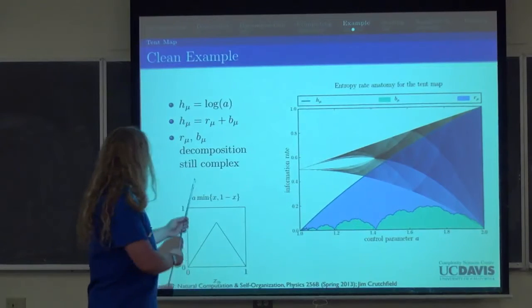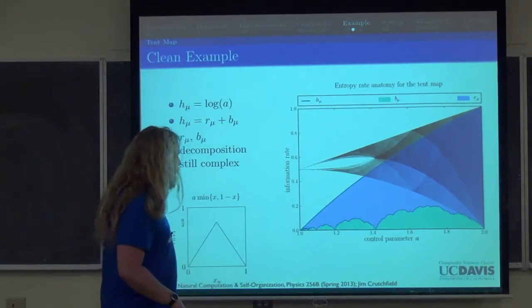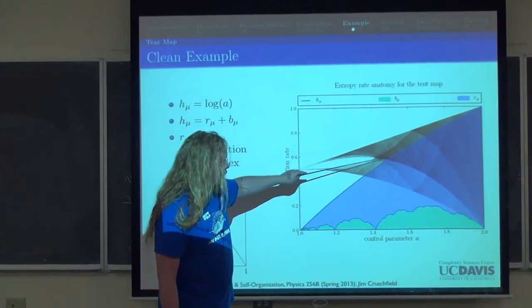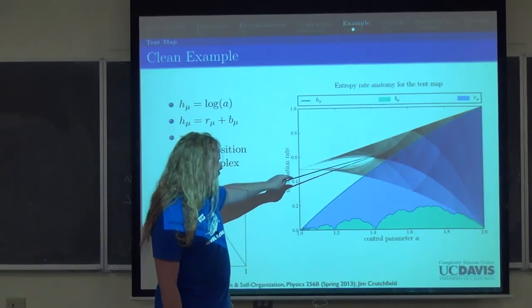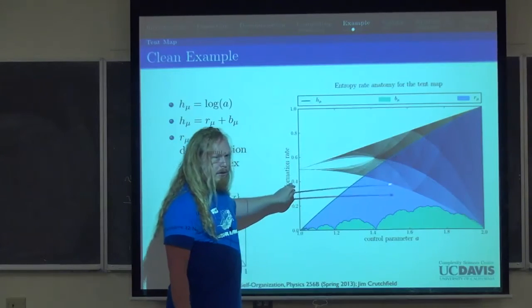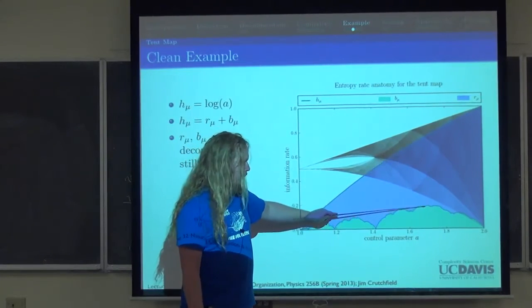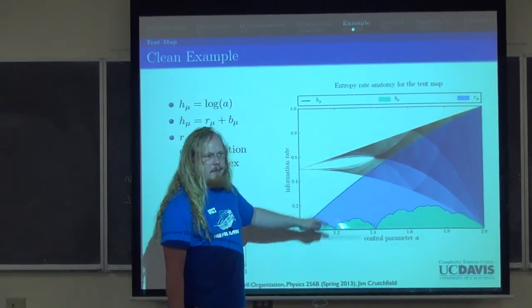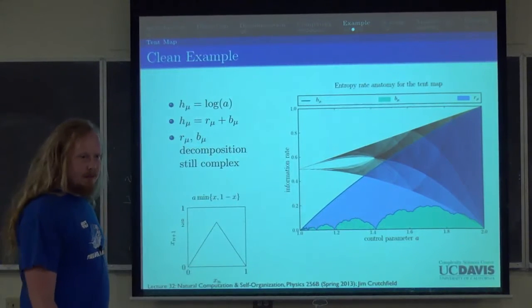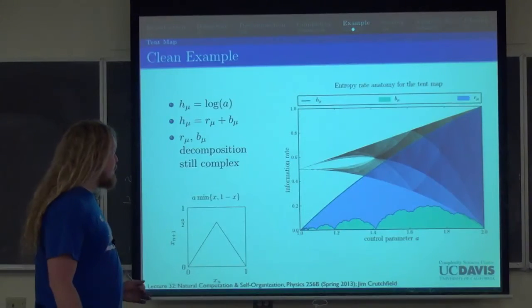The bifurcation diagram itself has many features — veils crossing — that are not reflected by the Lyapunov exponent. We believe this decomposition is picking up some of that behavior. There also appears to be self-similarity in the decomposition, which we'll get to in a few more slides.